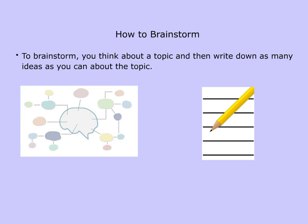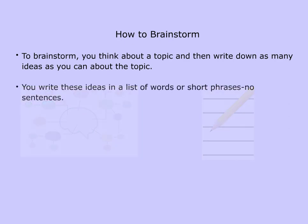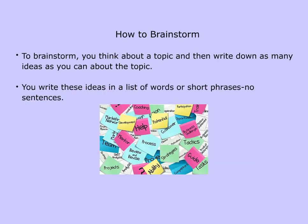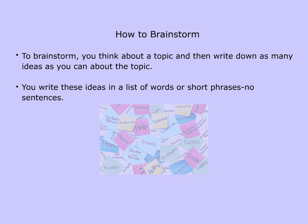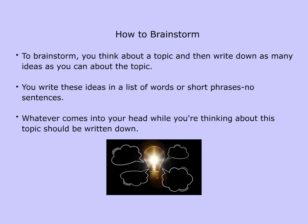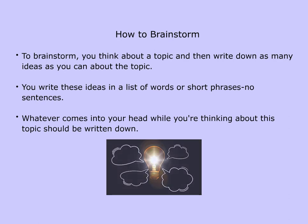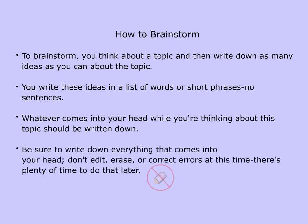To brainstorm, you think about a topic and then write down as many ideas as you can about the topic. You write these ideas in a list of words or short phrases — no sentences. Whatever comes into your head while you're thinking about this topic should be written down. Be sure to write down everything that comes into your head. Don't edit, erase, or correct errors at this time. There's plenty of time to do that later.